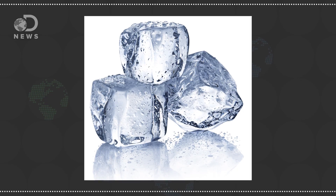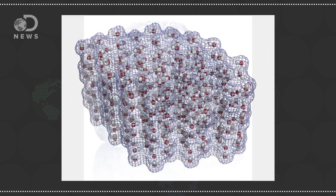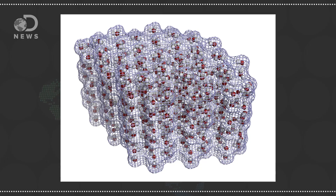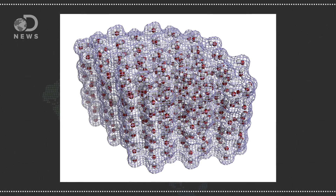Objects can move through different states of matter depending on the density of their particles. Solids exist when their particles become so densely packed together they don't move around much, and their atoms are in a fixed position. Solids don't change shape based on what container they're in.